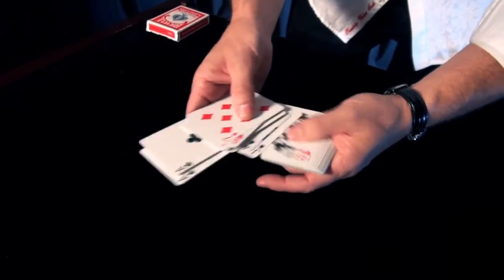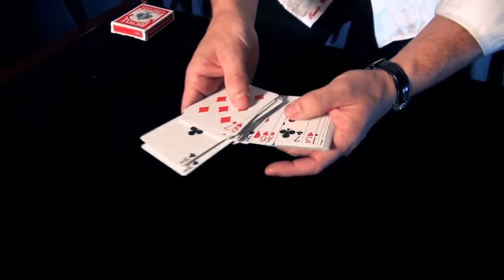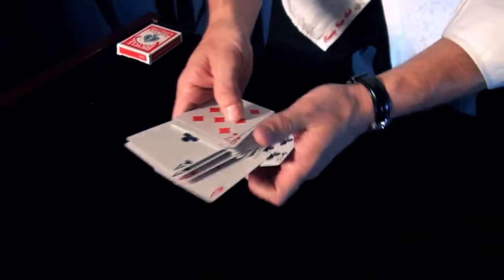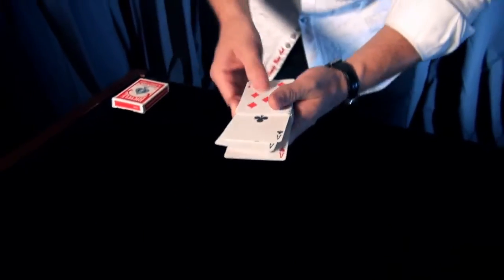Take them out right here. Clubs, hearts, spades. Where we go? There we go. Is that the diamonds? One more to go. There we go. And of course, last but not least, the ace of hearts.